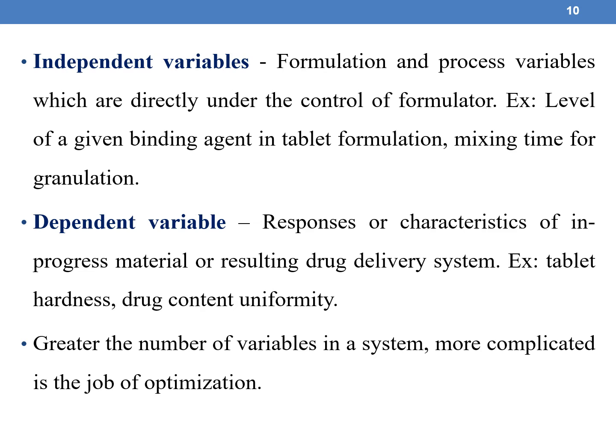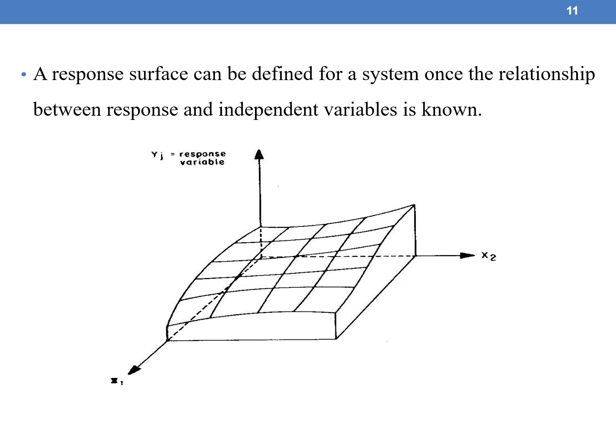The greater the number of variables in the system, the more complex the system will be. The response surface can be defined for a system once the relationship between the response (dependent variable) and independent variables is known. When a system contains a dependent variable y which varies along two independent variables x1 and x2, the response surface in the form of a 3D graph can be plotted accordingly.